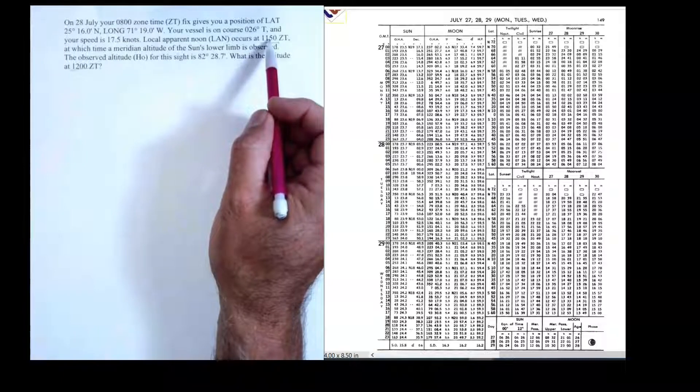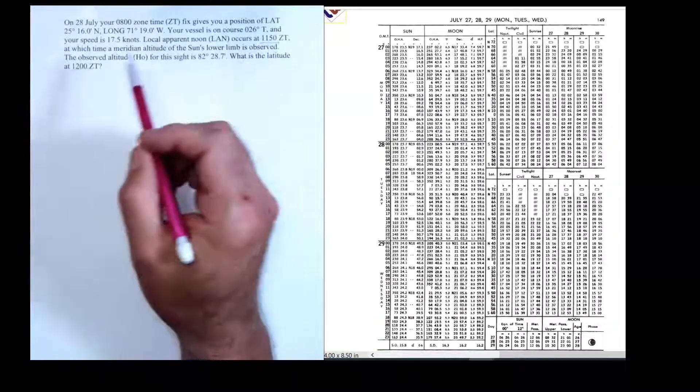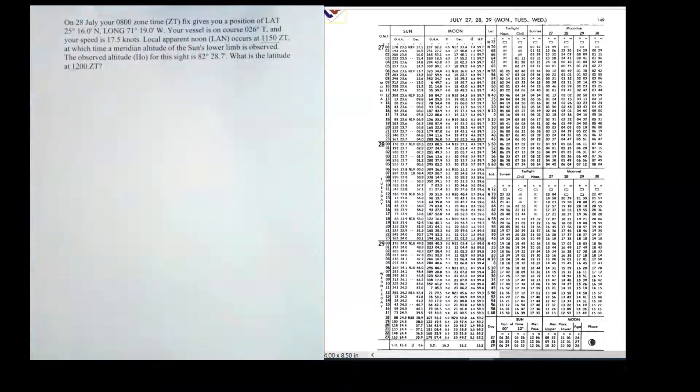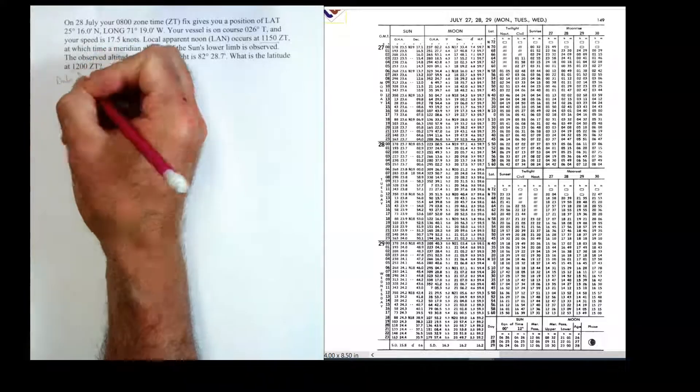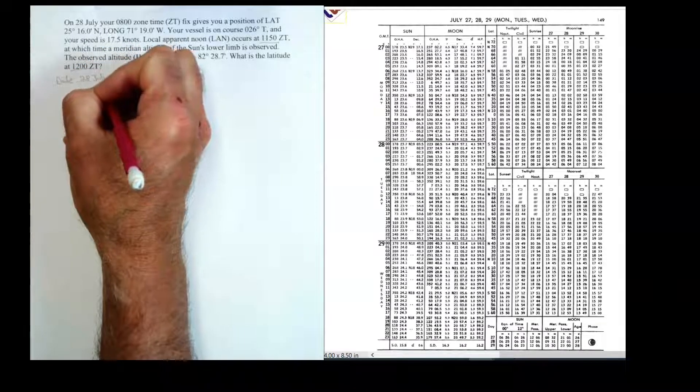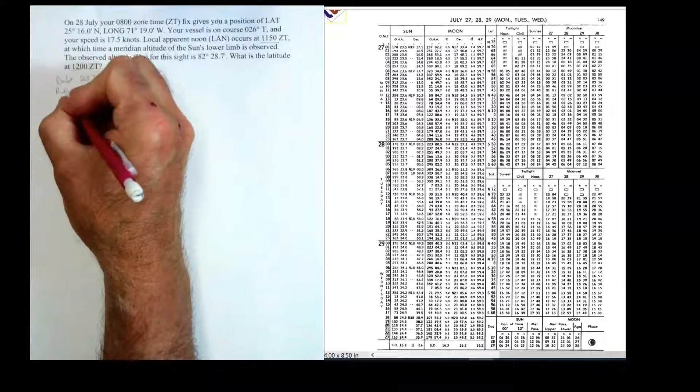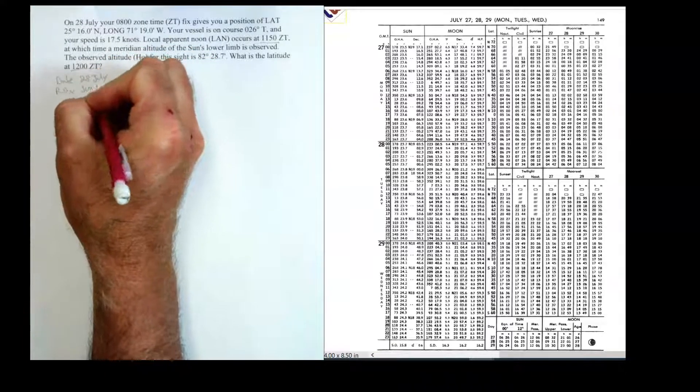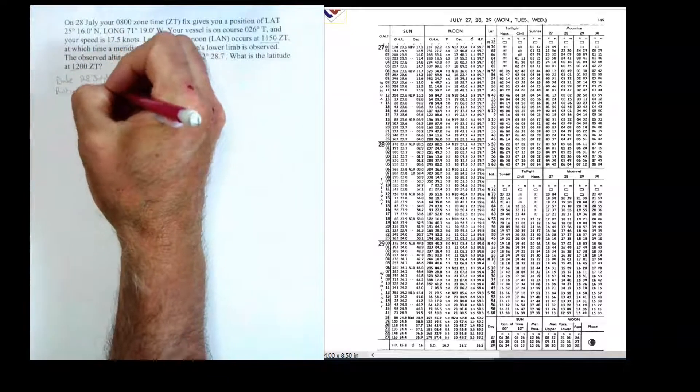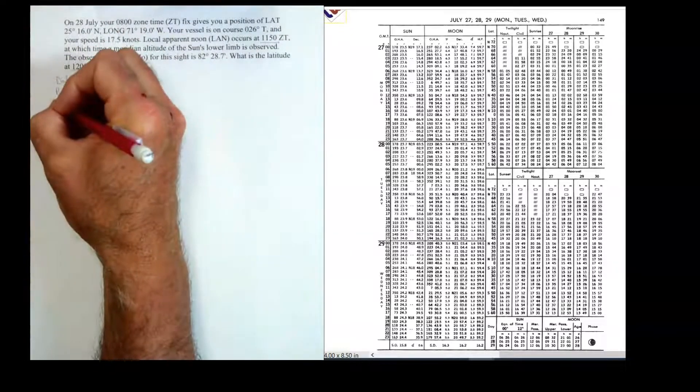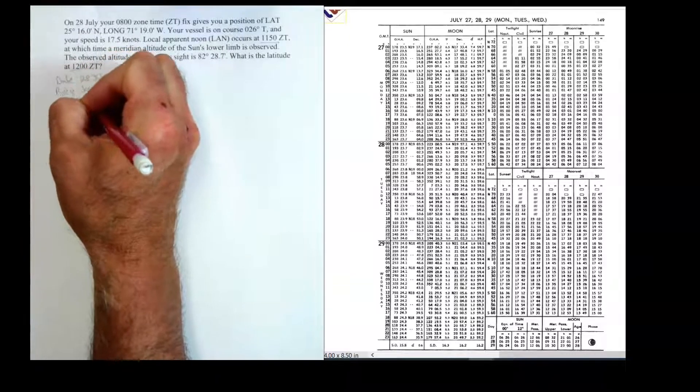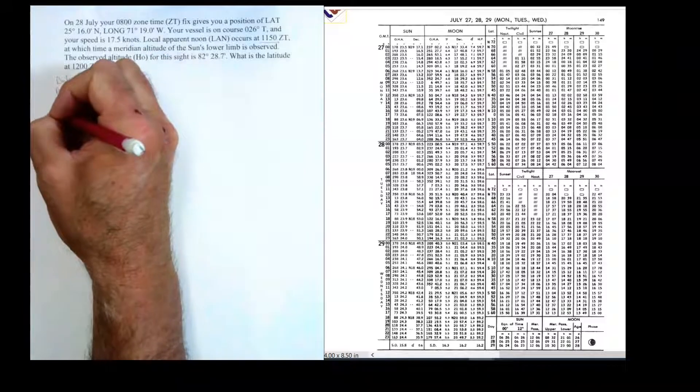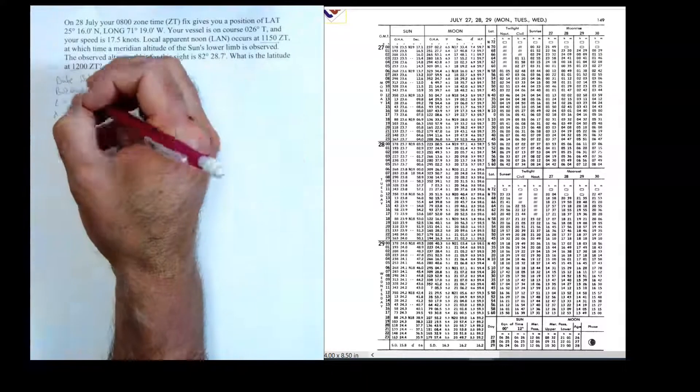We're going to be using the meridian passage method to calculate our latitude at LAN, 1150, but then we're going to have to advance that to noon. So let's collect a little bit of data here. The date is 28 July, the body is the sun, and it's the lower limb. The latitude that they gave us is 25.16 north.